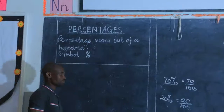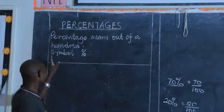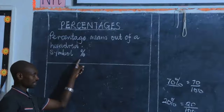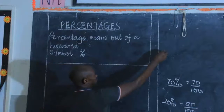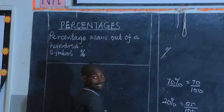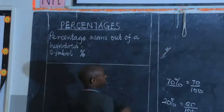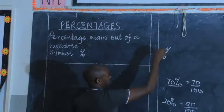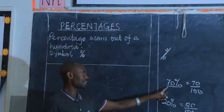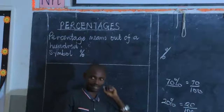We have a symbol which we use for percentage, and this symbol is sometimes wrongly written by learners. How do we write this symbol? You write a zero on this side, then a slanting stick, then another zero — one zero on the upper right side and one zero on the lower side. This symbol is read as percent. So if I write this, it is read as 70%; if I write this, it means 20%.